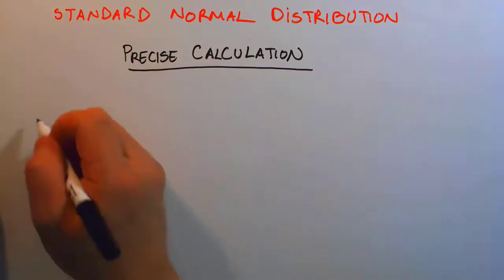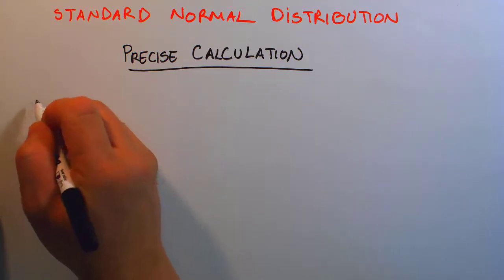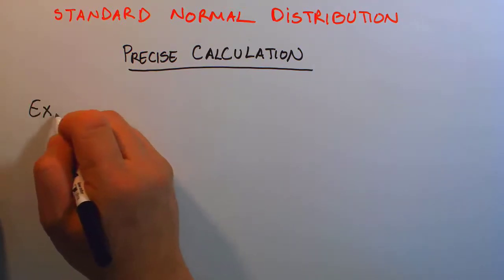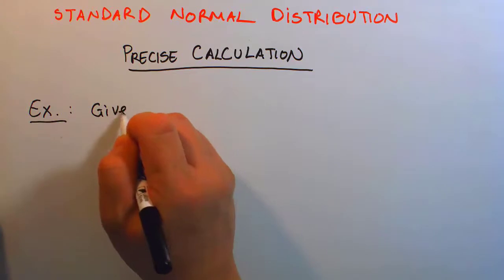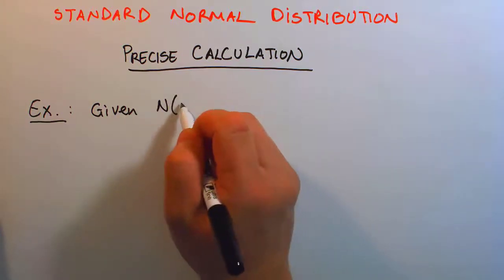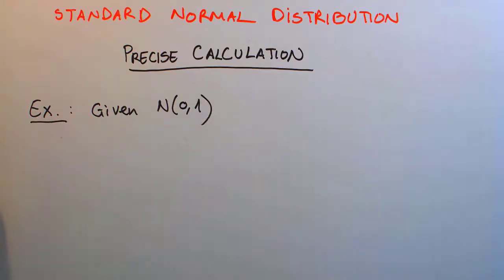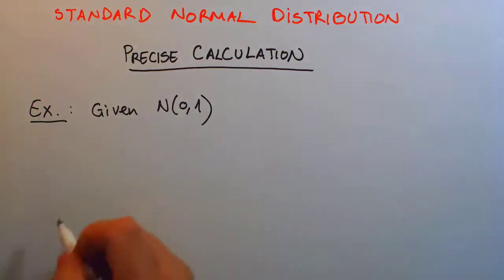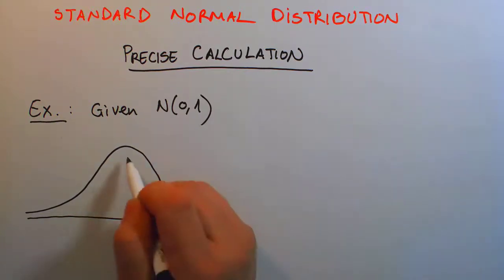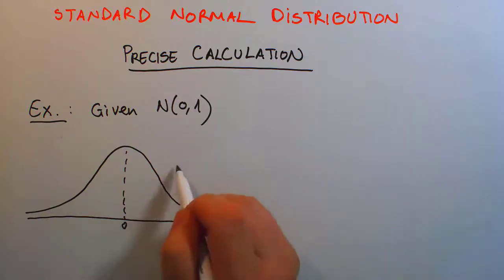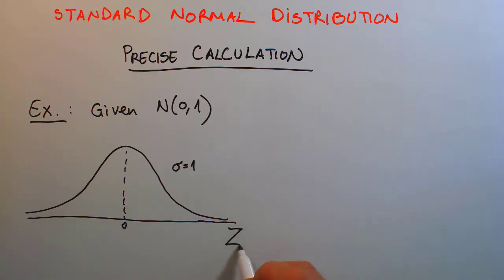In this example, we can apply what we've learned about the left area methods in the preceding video. We were given a standard normal distribution. As a good habit I highly recommend, draw for yourself a bell curve, getting ready for action, with center at zero, standard deviation sigma equals one, and the values arranged on this horizontal axis being the value of the random variable z.